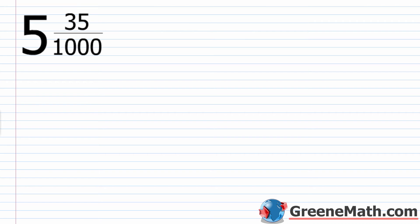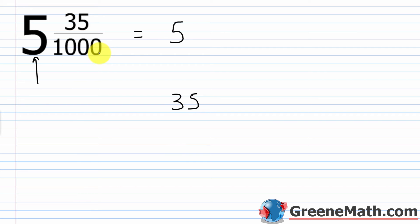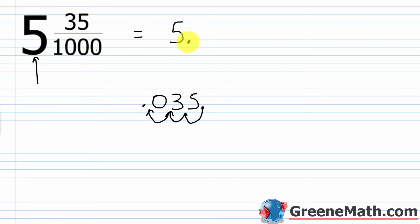What about 5 and 35 over 1,000? If you have a mixed number, just write the whole number part first. Then for 35 over 1,000: I write 35, and since 1,000 has three zeros — it's 10 to the third power — I move the decimal point one, two, three places to the left, inserting a zero, getting 0.035. So 5 and 35 thousandths is 5.035.